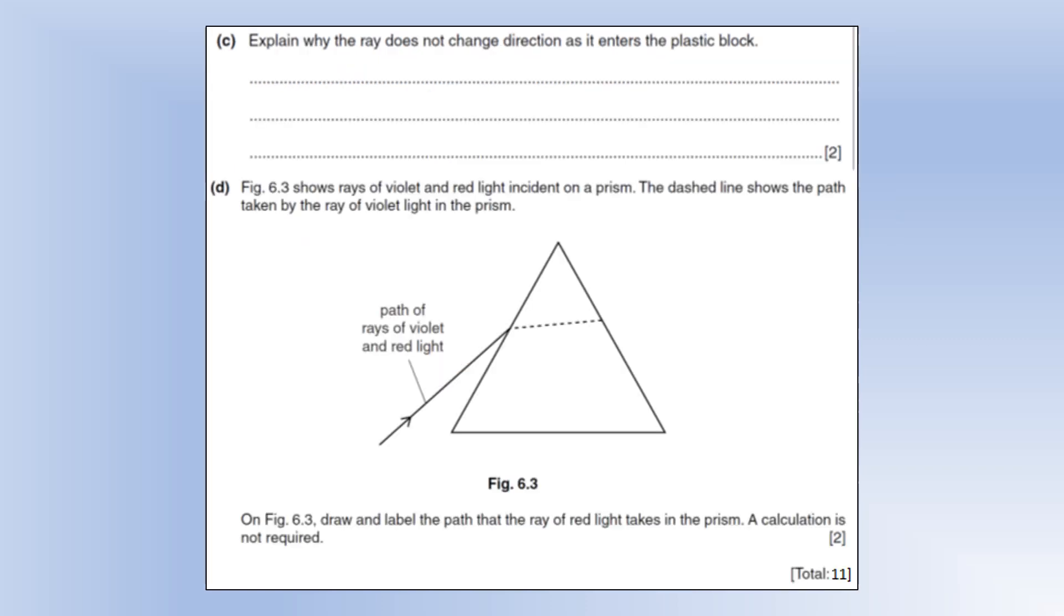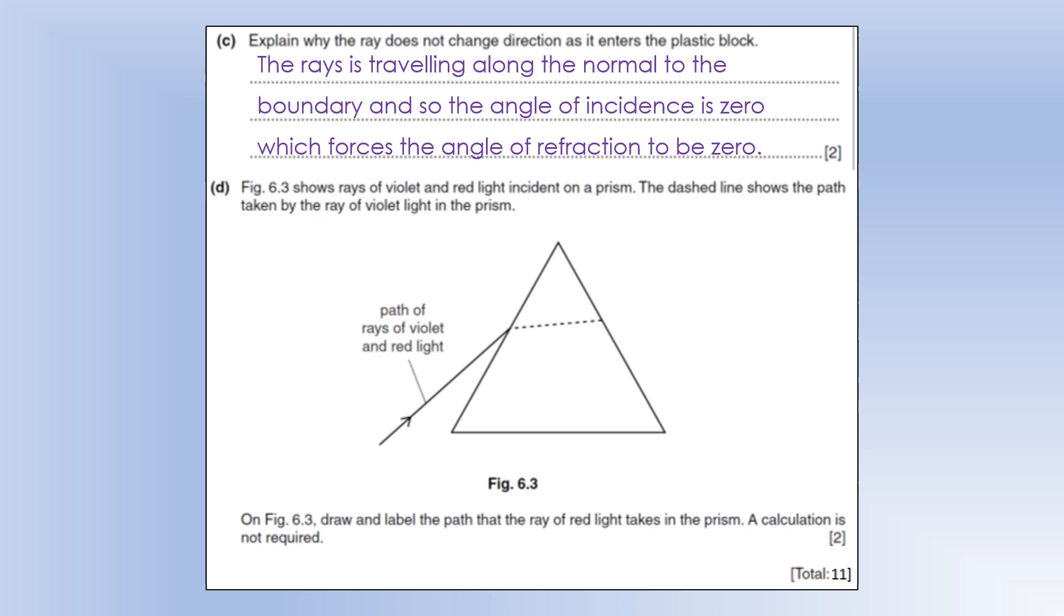Explain why the ray does not change direction when it enters the plastic block. Well, if you look at it you can see it hits the boundary along the normal. So if the ray is travelling on the normal, the angle of incidence is 0. So since the refractive indexes can't be 0, that must mean the angle of refraction is 0. So essentially it just continues in a straight line along the normal.